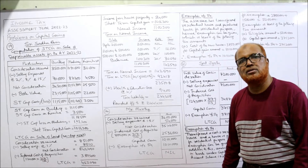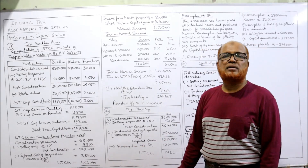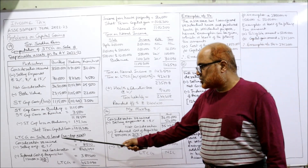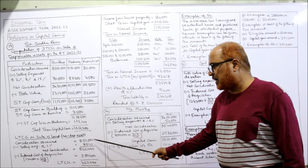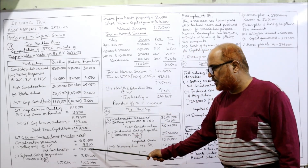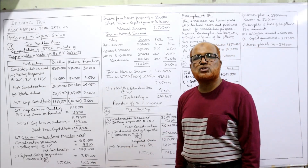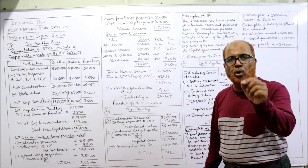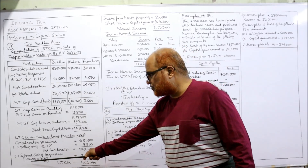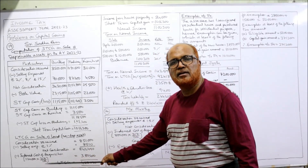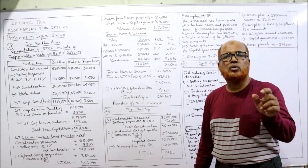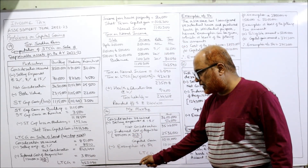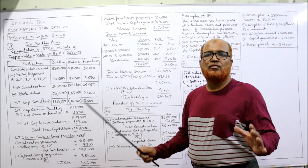Now we calculate long-term capital gain on sale of land, since land is a non-depreciable asset. Consideration received: ₹8,51,000. Deduct 1% selling expense. Net consideration: ₹8,42,490. Indexed cost of acquisition: purchase price ₹1,20,000 × CII 317 (for PY 2021-22) ÷ 100 = ₹3,80,400. Deduct indexed cost. Long-term capital gain: ₹4,62,090. Note: indexing is not done for short-term; it is only done for long-term.